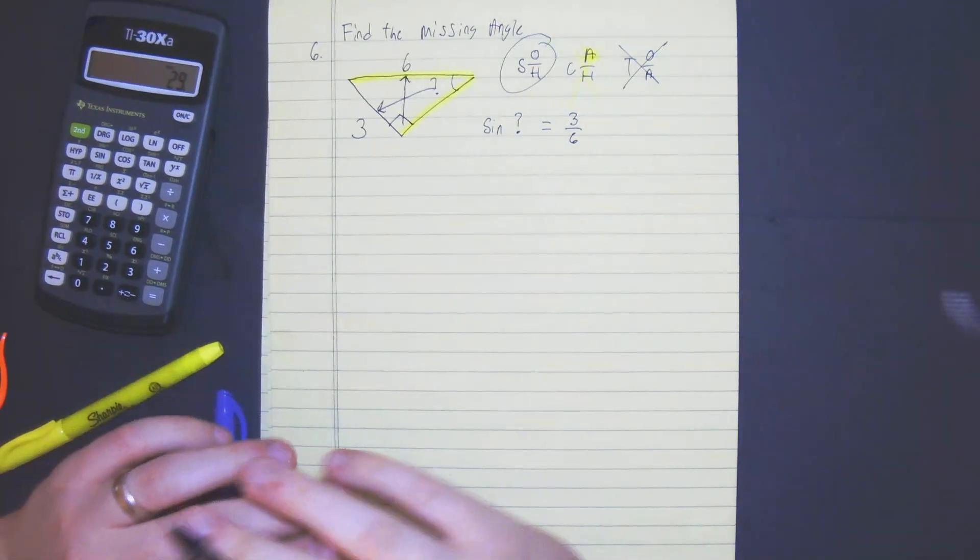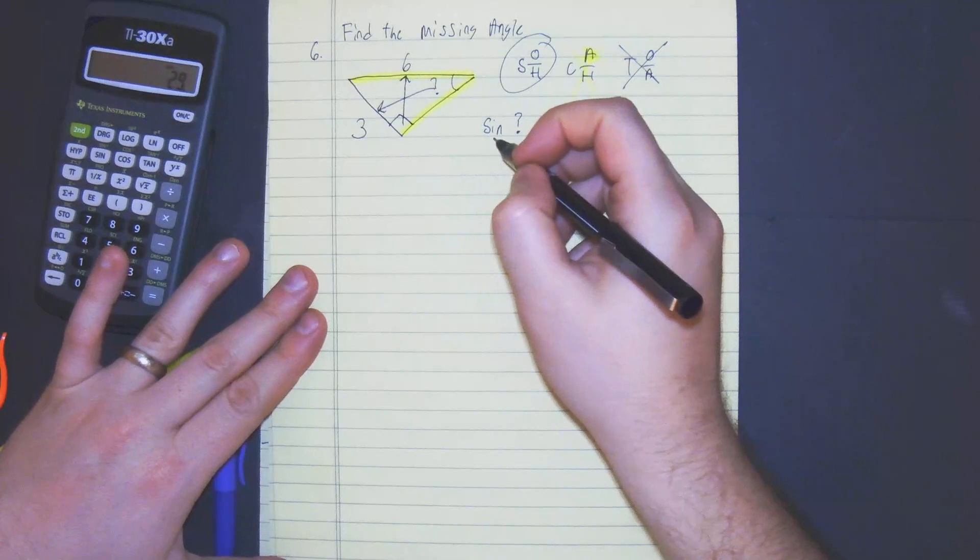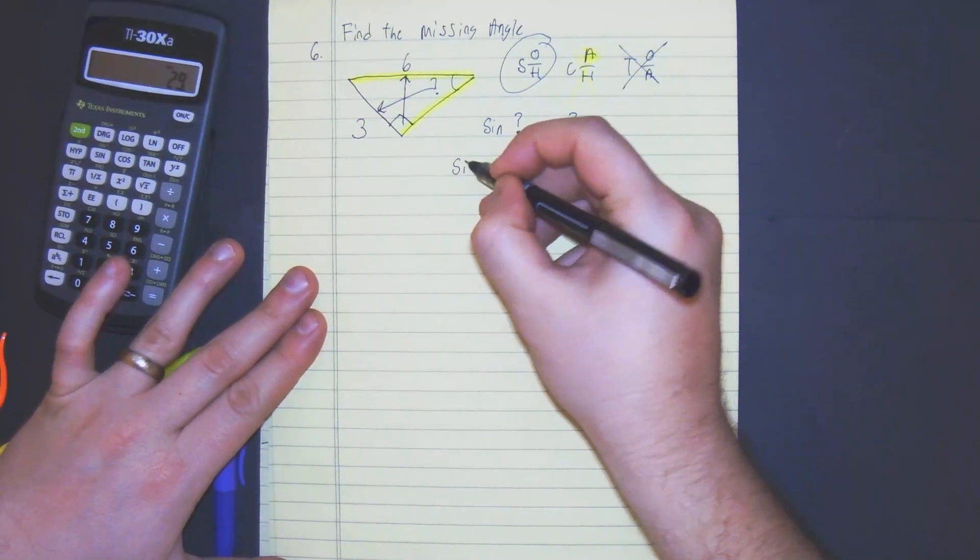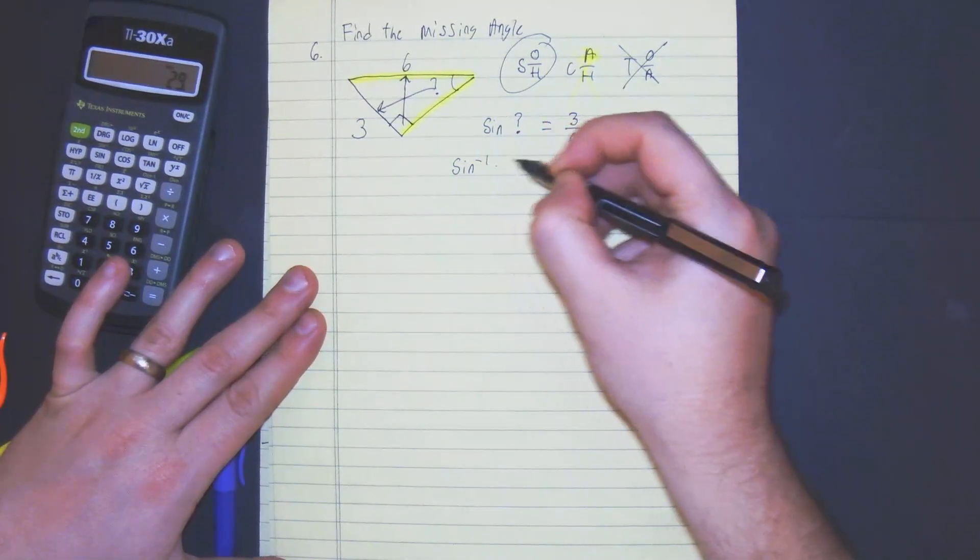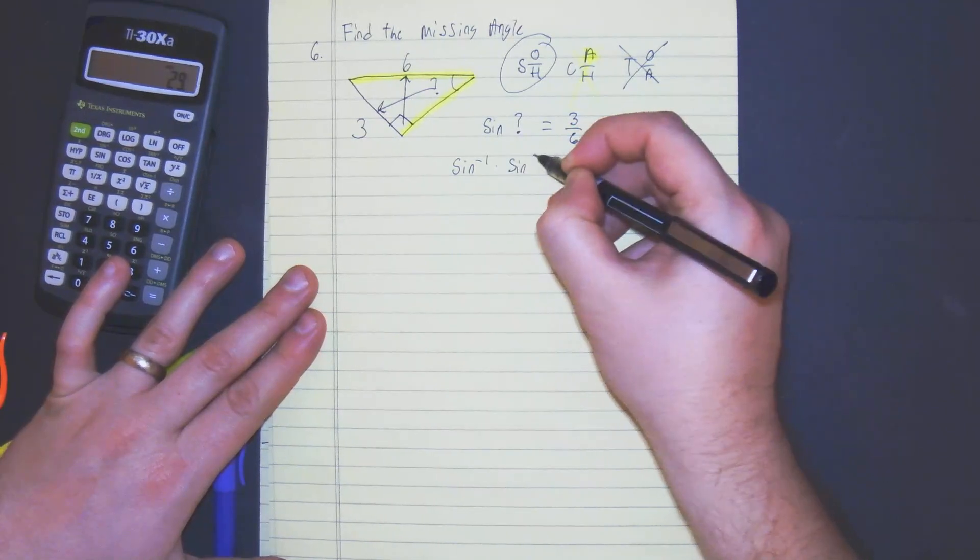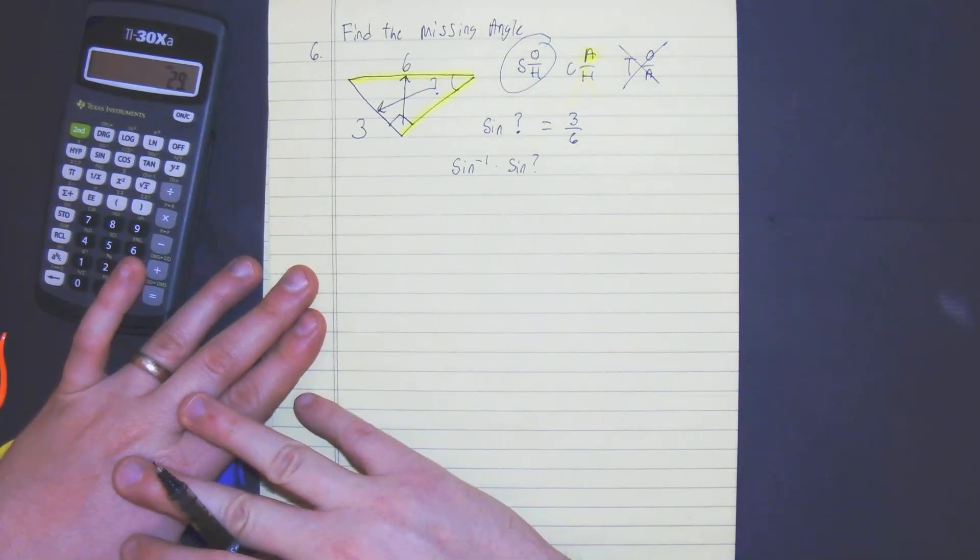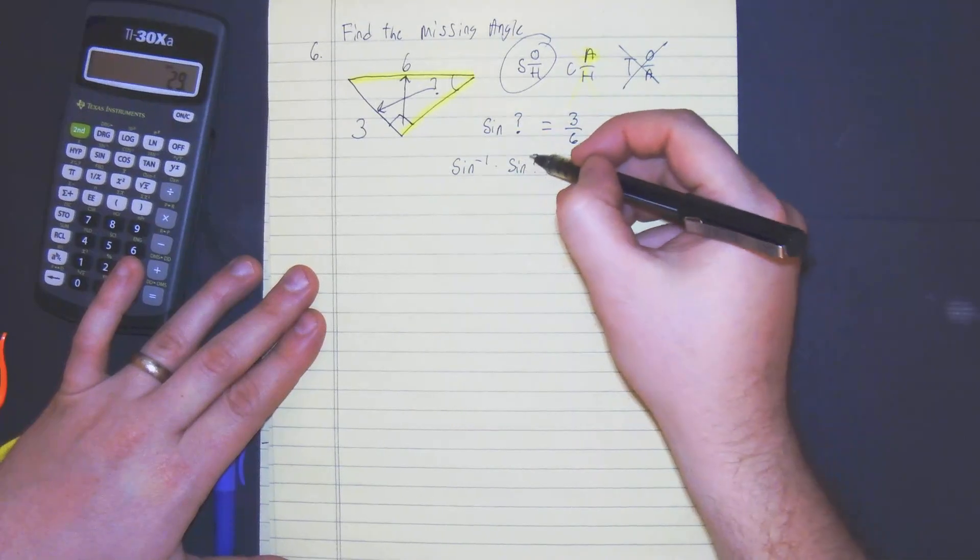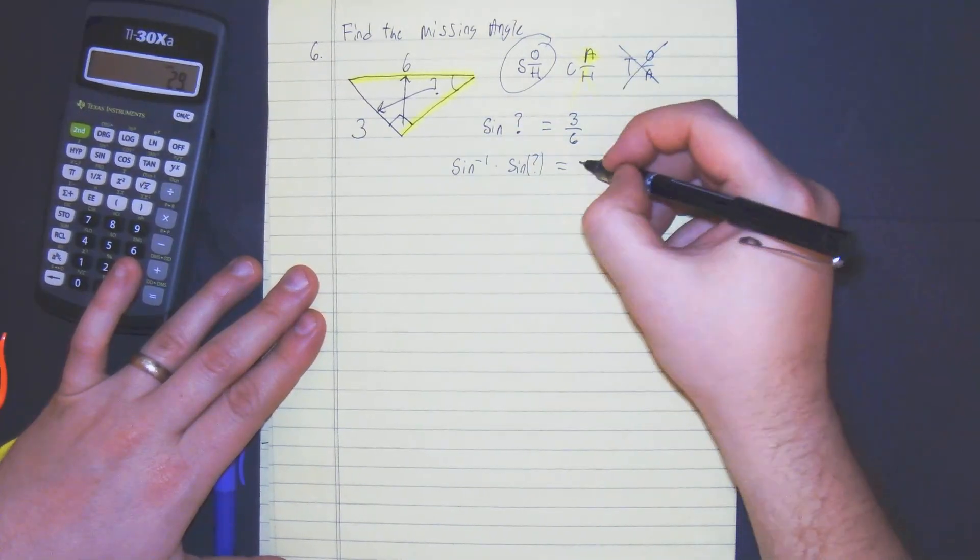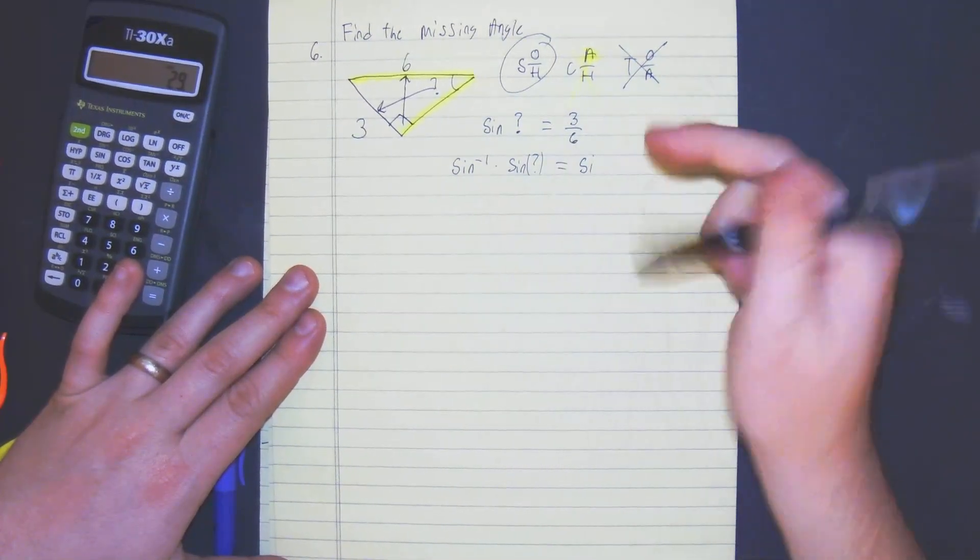So I'm going to multiply both sides by the inverse to get rid of this sine ratio. So arc sine multiplied by the sine of the unknown angle is equal to what I do to one side, I have to do the other.